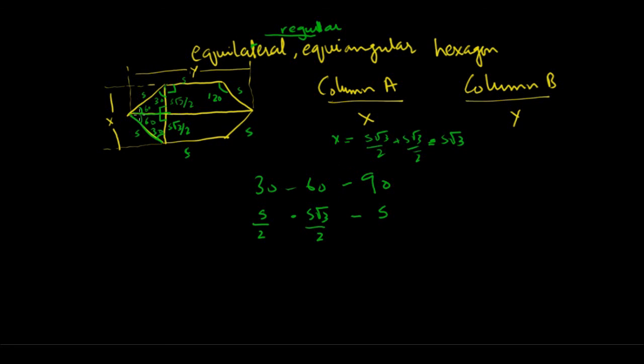What about y? I'll divide y into three parts. The middle part is equal to the side of the hexagon, so it's s. For the remaining parts, using the 30-60-90 triangle, the base opposite 30° is s/2.